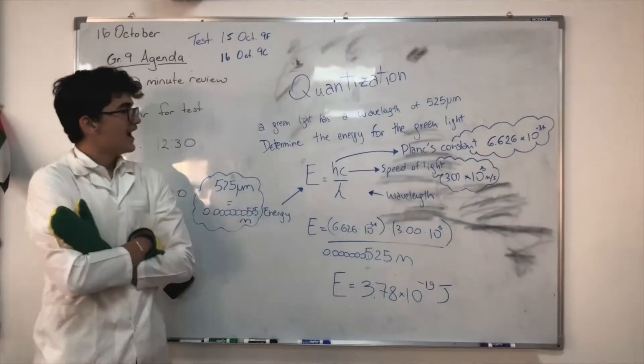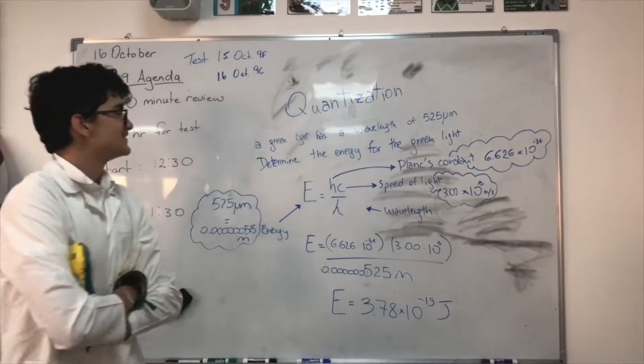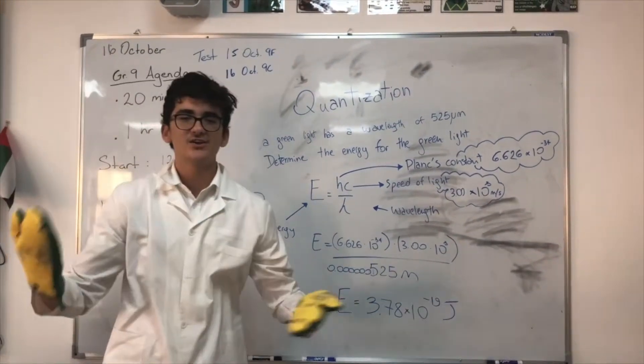Physics and chemistry intertwine. A green light has a wavelength of 525 nanometers. Determine the energy for the green light.